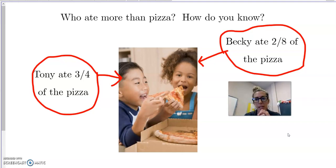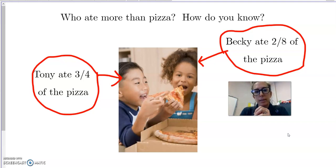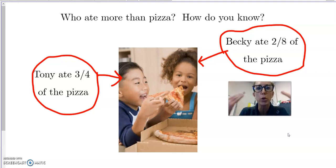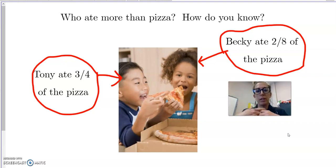Now let's go to Becky. What did Becky eat? She ate two eighths of the pizza. Is that a lot of pizza? Is that close to what Tony ate? Do you already know who ate more? What would you do to prove your choice? If you're saying Tony ate the most pizza, how are you going to tell us why? Well because three fourths of pizza is more than two eighths of pizza.